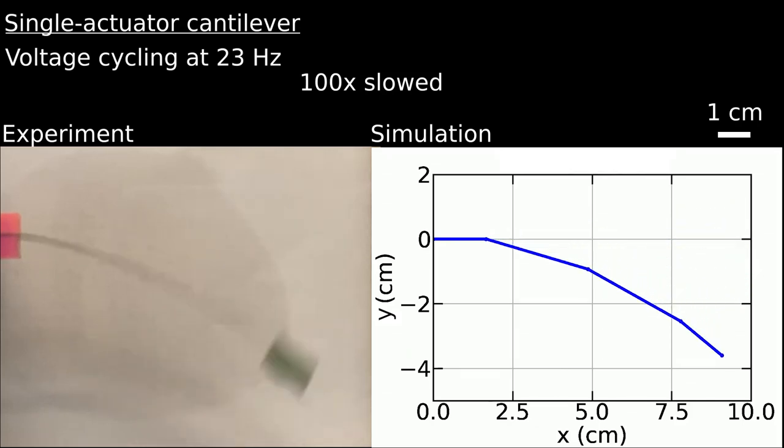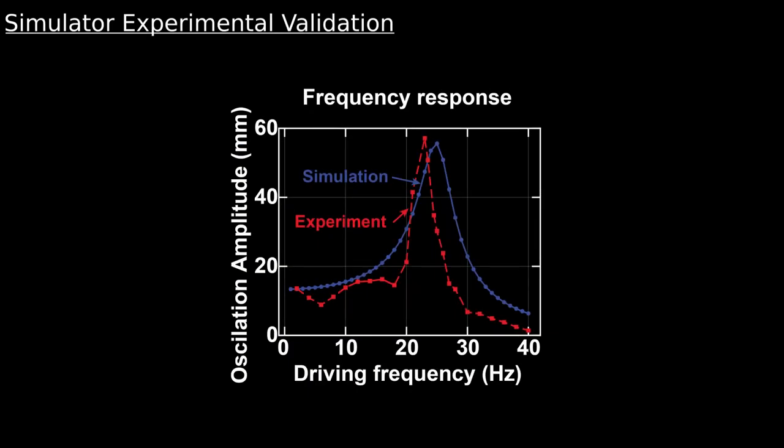Good agreement is observed in time and frequency domains. The actuator bends down and up with swelling voltage. We plot oscillation amplitude with varied driving frequency. The resonant peak is 60 mm at 23 Hz.